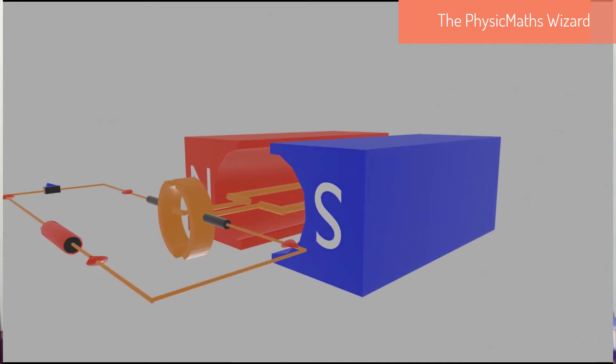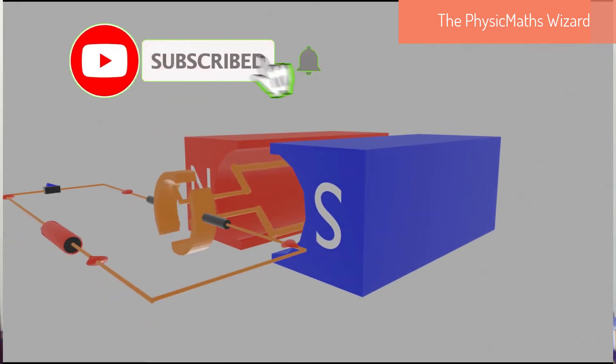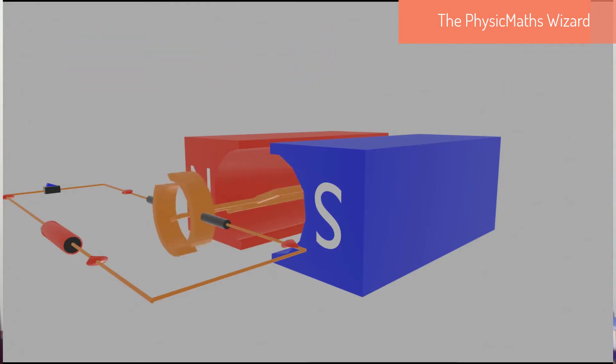After passing this vertical position, the contacts with the carbon brushes and the two sides of the armature coil are interchanged, so this keeps the current flowing in the same direction, hence the motor rotates in the same direction.